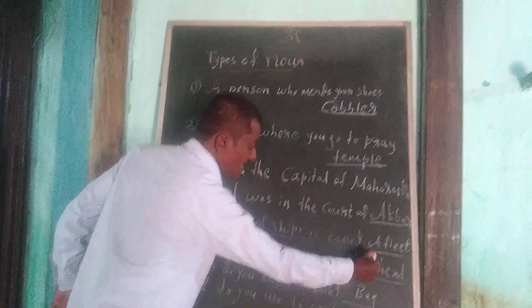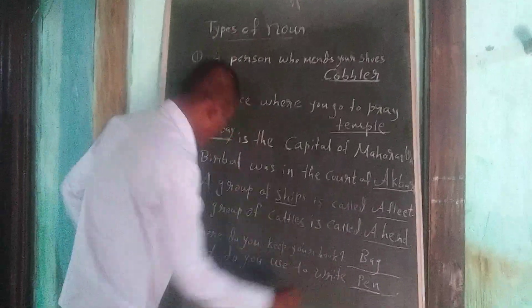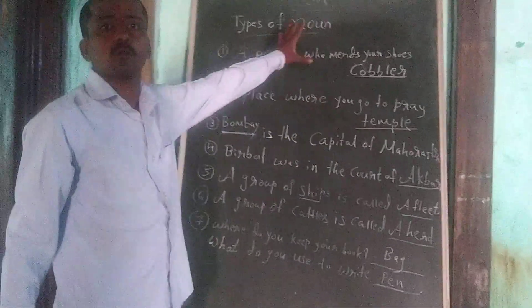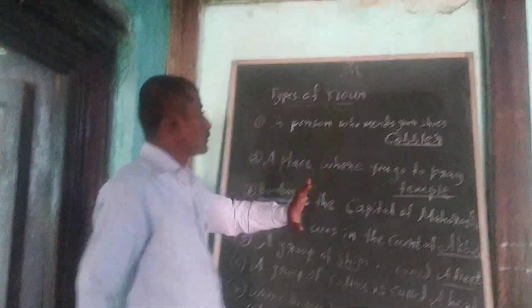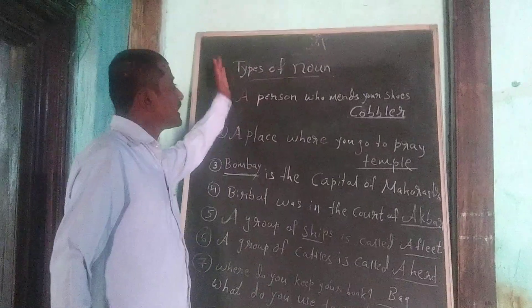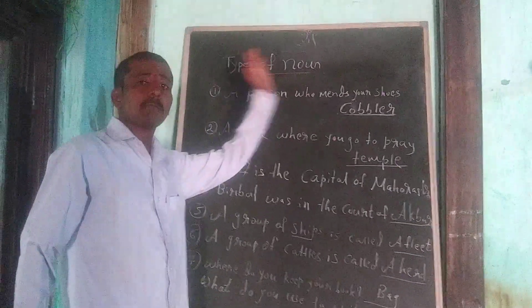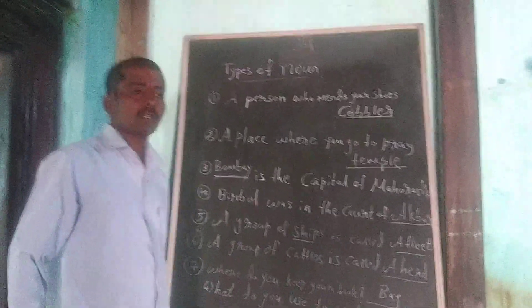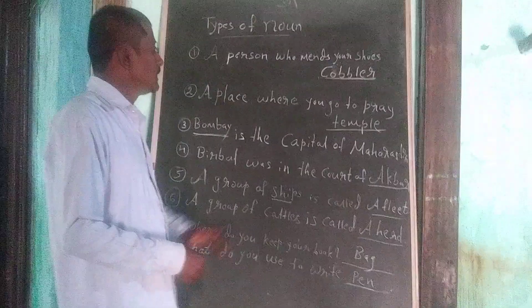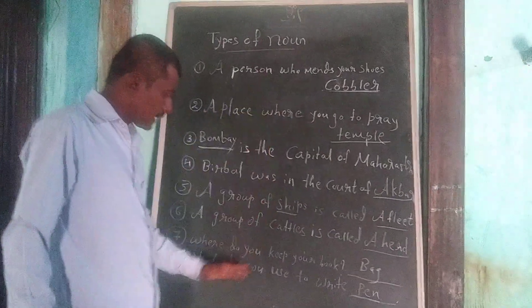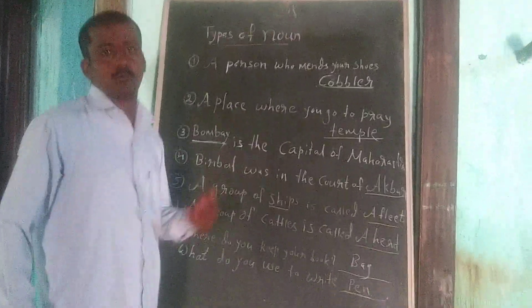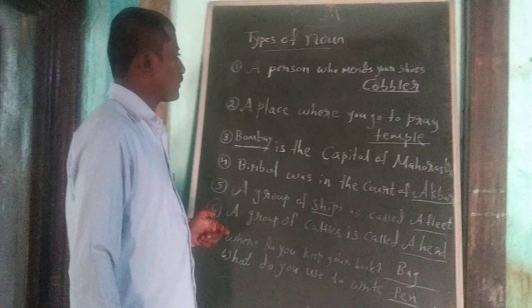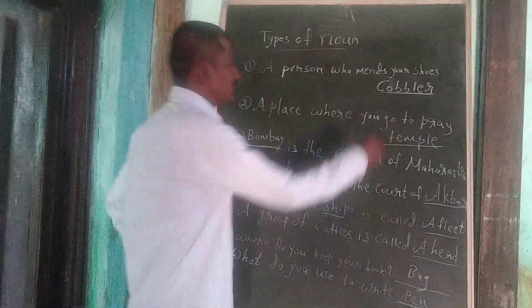So on the basis of these examples — cobbler, temple, Akbar, Bombay, fleet, bag, pen — all are nouns. These are all called nouns. But today we are going to study the types of noun. There are five types of nouns, but first I will explain the four main types, then the fifth one.